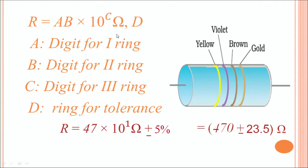How to read the values? There is a very simple formula: R equals AB × 10^C ohms. A is the digital value of the first colored ring opposite to the golden ring. So yellow has a digital value 4. Then the second color is violet, which has a digital value of 7 × 10^C, where C is the digital value of the third color. The third color is brown, which has a digital value of 1. So the value is 47 × 10^1 ohms, that means 470 ohms.